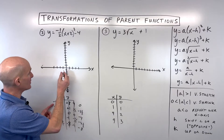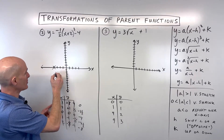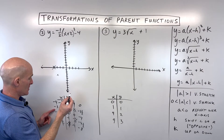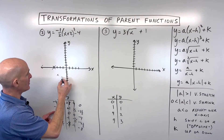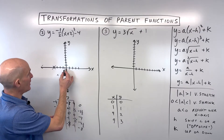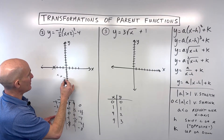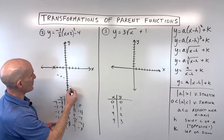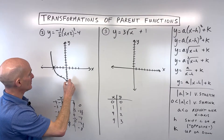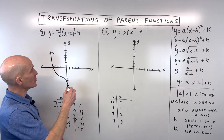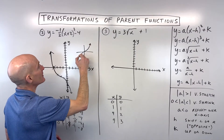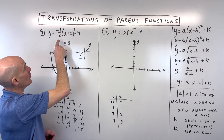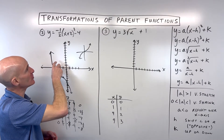Plotting the points: (-4, 0), (-3, -3.5), (-2, -4), (-1, -4.5), and (0, -8). The graph looks like this — the original cubic went up to the right, but the negative reflects it so it goes down to the right. We also applied a vertical shrink by half, shifted left 2, and down 4.